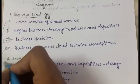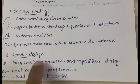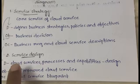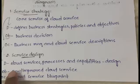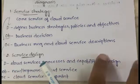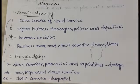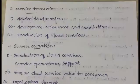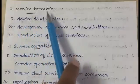The output of service strategy becomes the input for service design. The description of service design is that it helps with the design of cloud services, processes, and capabilities. The objective of service design is to produce new and improved cloud services. The outcome of service design is a cloud service blueprint — an outline or brief overview of the cloud service.